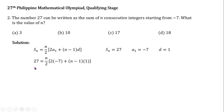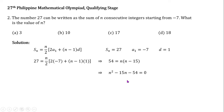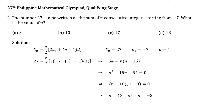Plugging in, we should get this equation. Multiplying both sides by 2 and simplifying, we should get 54 equals n times n minus 15. Since n must be positive, you can guess and check, or expand and distribute n to get a quadratic equation which you can easily factorize. Factorizing gives n minus 18 times n plus 3 equals 0, so n equals 18 or n equals negative 3. We take n equals 18 since n must be positive.